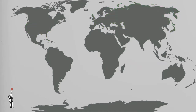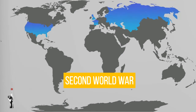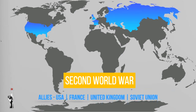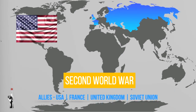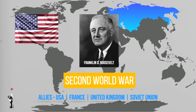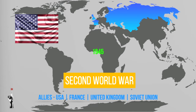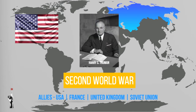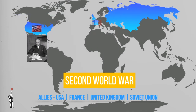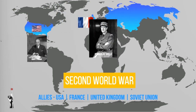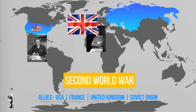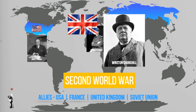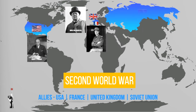Now let's look at the leaders and the flags of these countries during the Second World War. Let's start with the Allies. Franklin D. Roosevelt of America served in the Second World War as the President of the United States up until 1945. After he died, he was replaced with Harry S. Truman. Charles de Gaulle served as President of France. Winston Churchill served as Prime Minister of the UK. And the leader of the Soviet Union during the Second World War was Joseph Stalin.